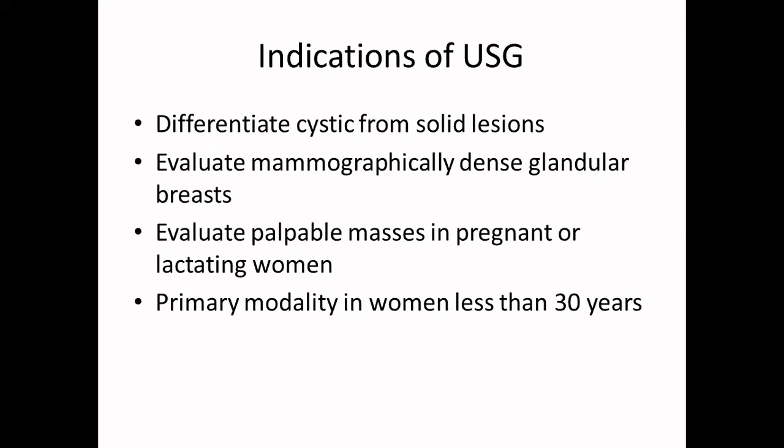Most early suspicious lesions are in the form of microcalcifications, very small masses, or architectural distortion — which we cannot pick up on ultrasound. On ultrasound, the glandular parenchyma appears hypoechoic, so we often end up missing some genuine lesions because most lesions also appear hypoechoic.